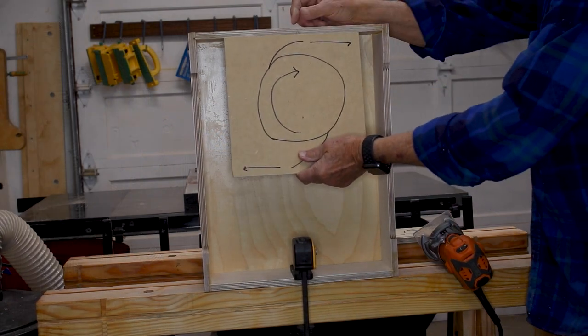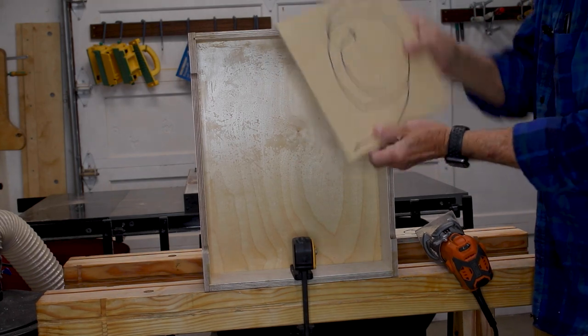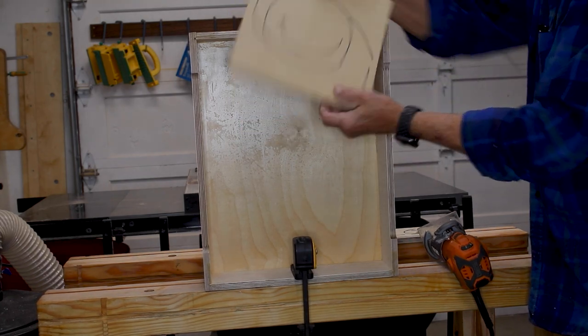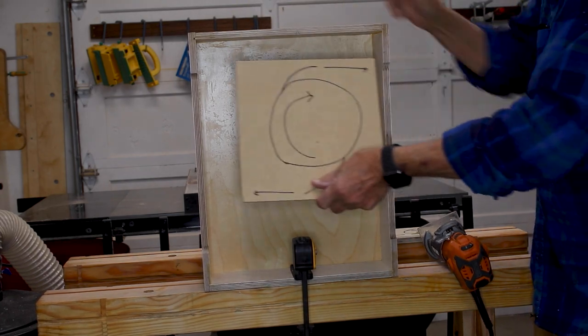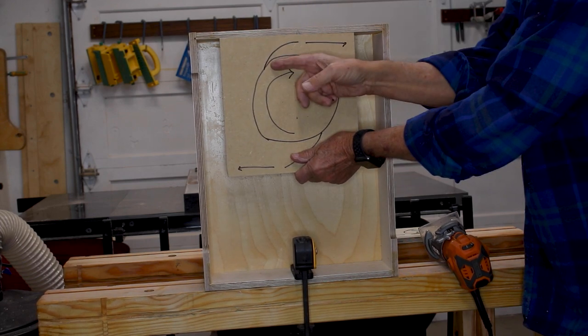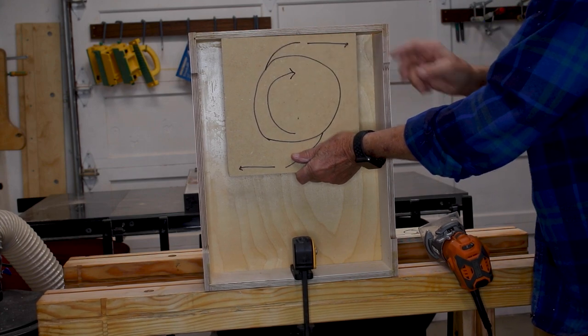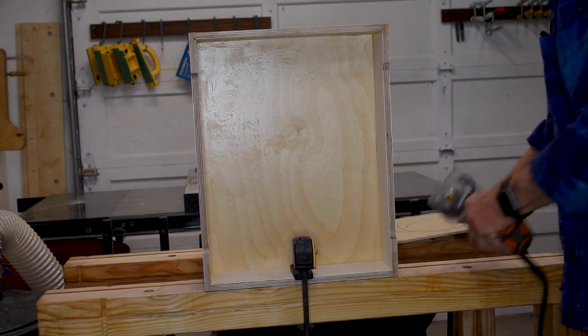So here I've got this and it doesn't matter which way I do this, it comes out the same. If I do it this way, it's kind of like a smiley face. But anyway, if I put my router under here, then my router bit is turning this way and I want to go this direction.